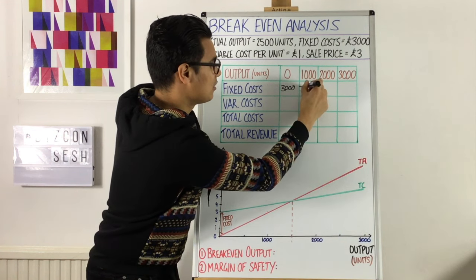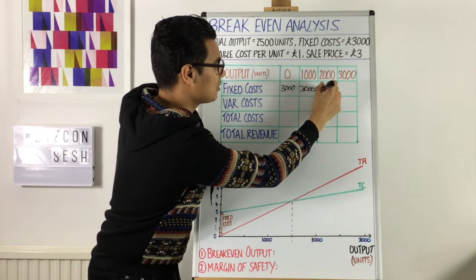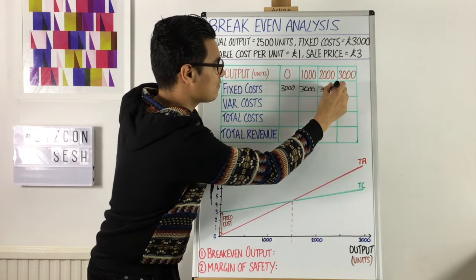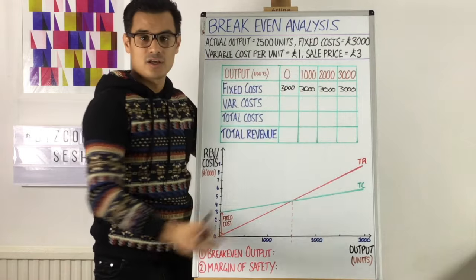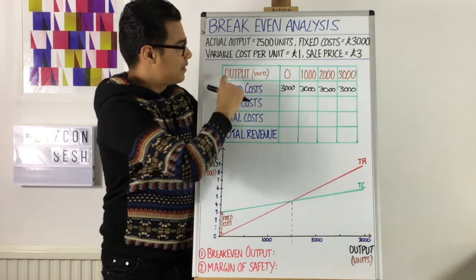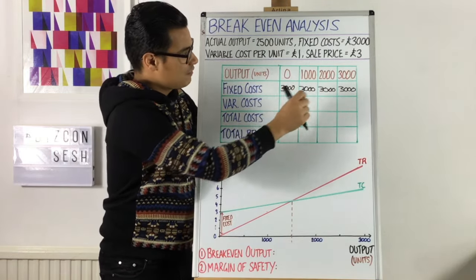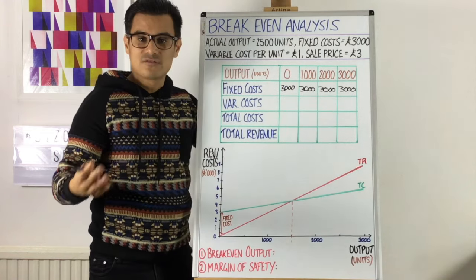So let's just put fixed costs the same all the way through. So it'll be £3,000, £3,000, £3,000, £3,000. So the fixed costs is £3,000. Therefore, it goes the whole way. So if they make zero things, it's £3,000. If they make 3,000 things, it's £3,000.